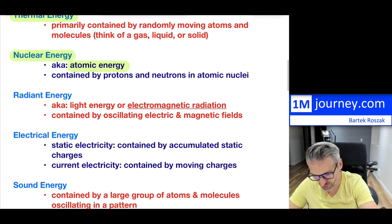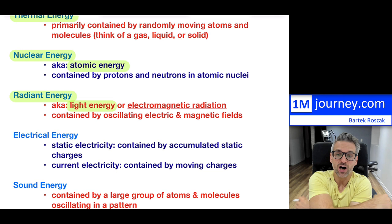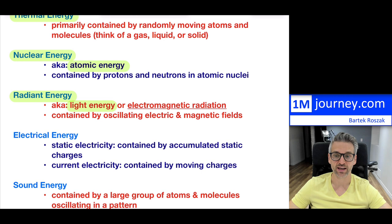Then you can shift over to radiant energy. A very nice way to think about it is in terms of light energy. If you're thinking about the sun, or any form of light, this radiant energy is really contained by the oscillations caused by electric and magnetic fields.